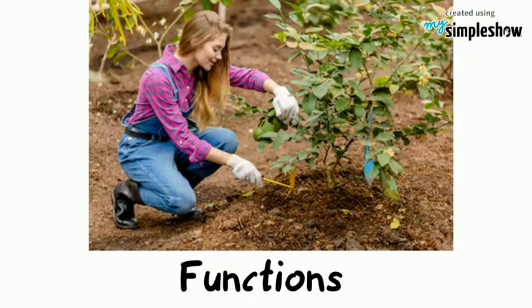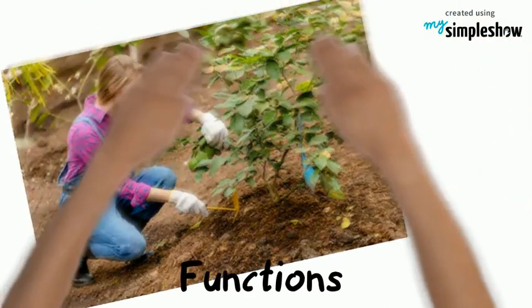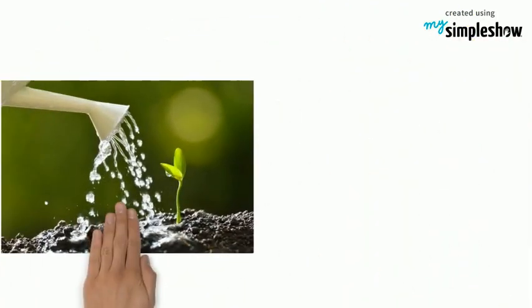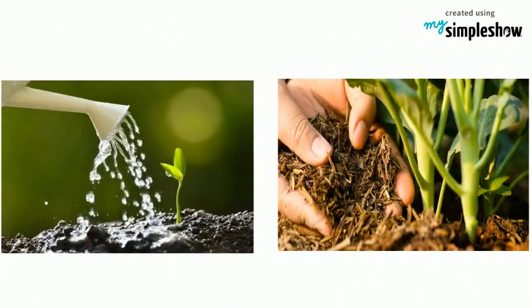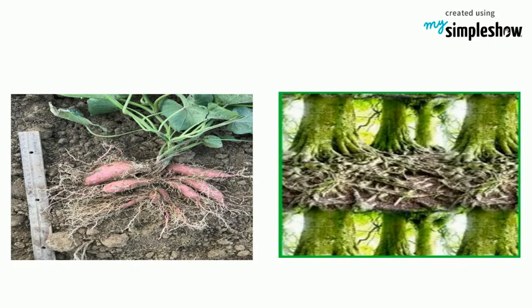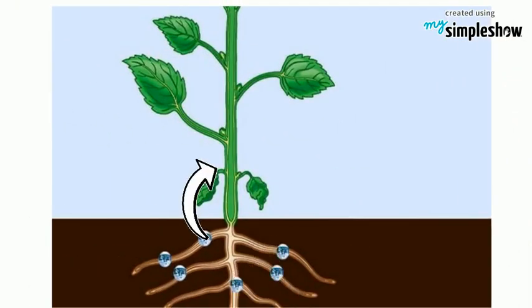Here are the functions of the roots. Roots anchor and support the plant to the soil. They absorb water, nutrients, and minerals for the plant. They also store food or water, and transport minerals to the stem.